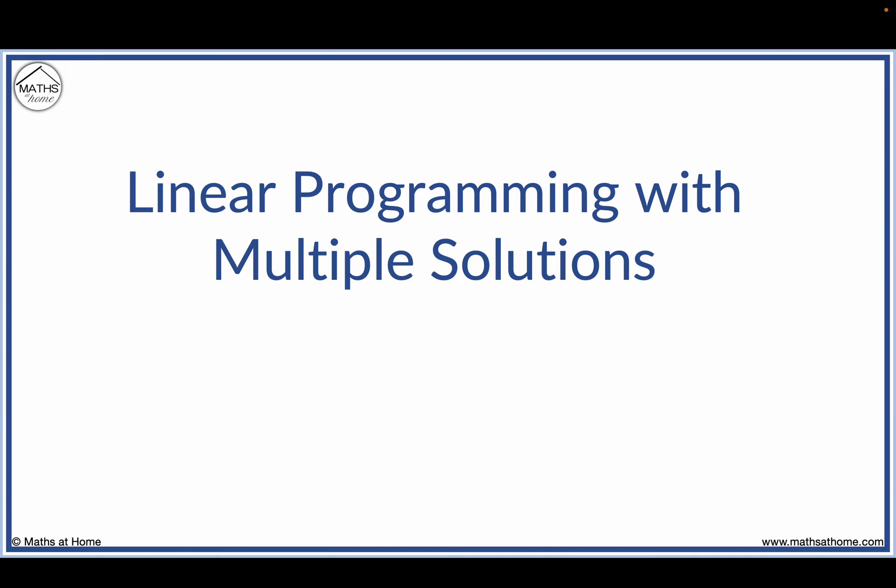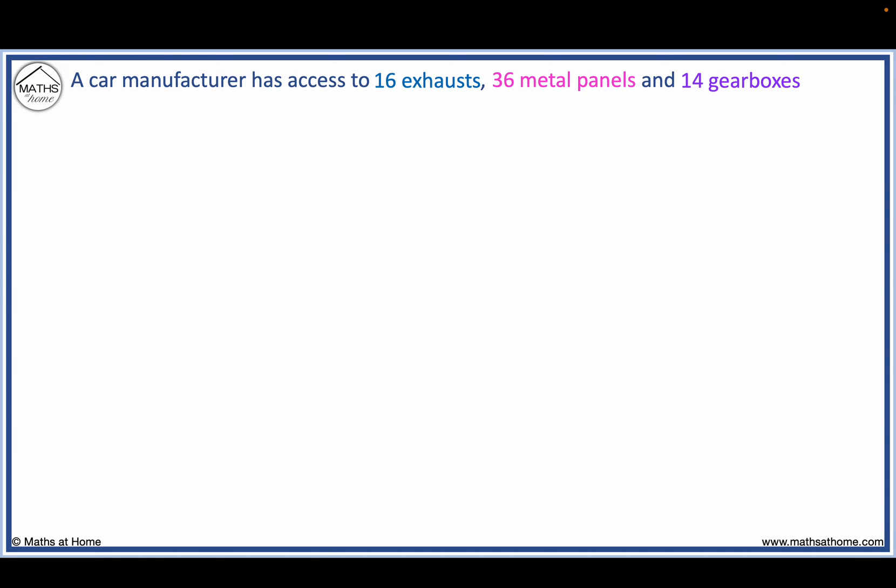In this lesson we learn how to solve linear programming problems with multiple optimal solutions. A car manufacturer has access to 16 exhausts, 36 metal panels and 14 gearboxes.